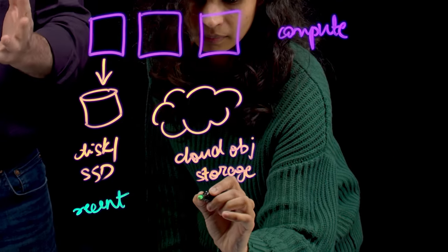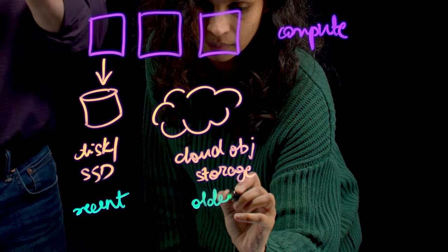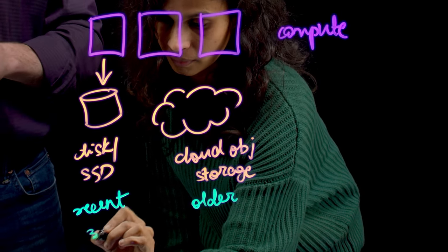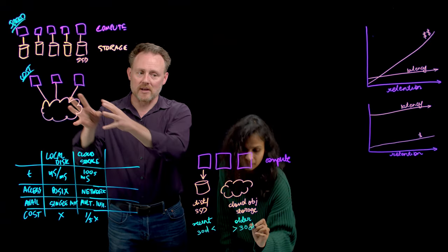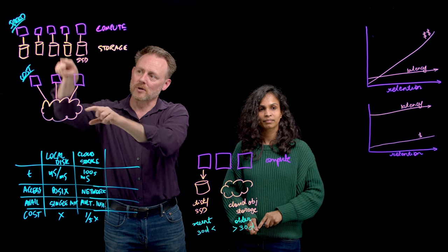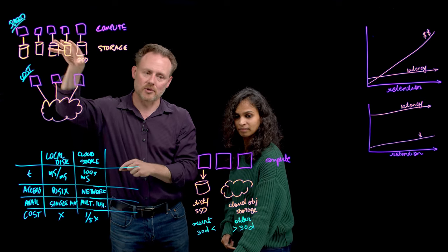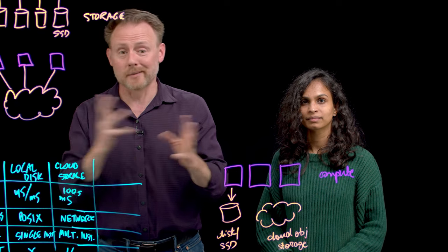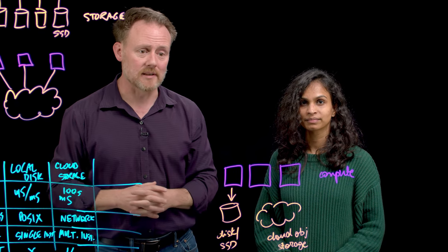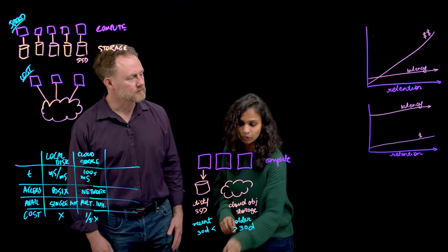So 30 days might be what your organization considers historical. You can configure that. Maybe for another table it's seven. That's all up to you. Like I said, table by table basis. And that older data gets pushed into the cloud blob store. The newer data stays direct attached on SSDs. Your applications can query that table completely unaware that that distinction even exists.